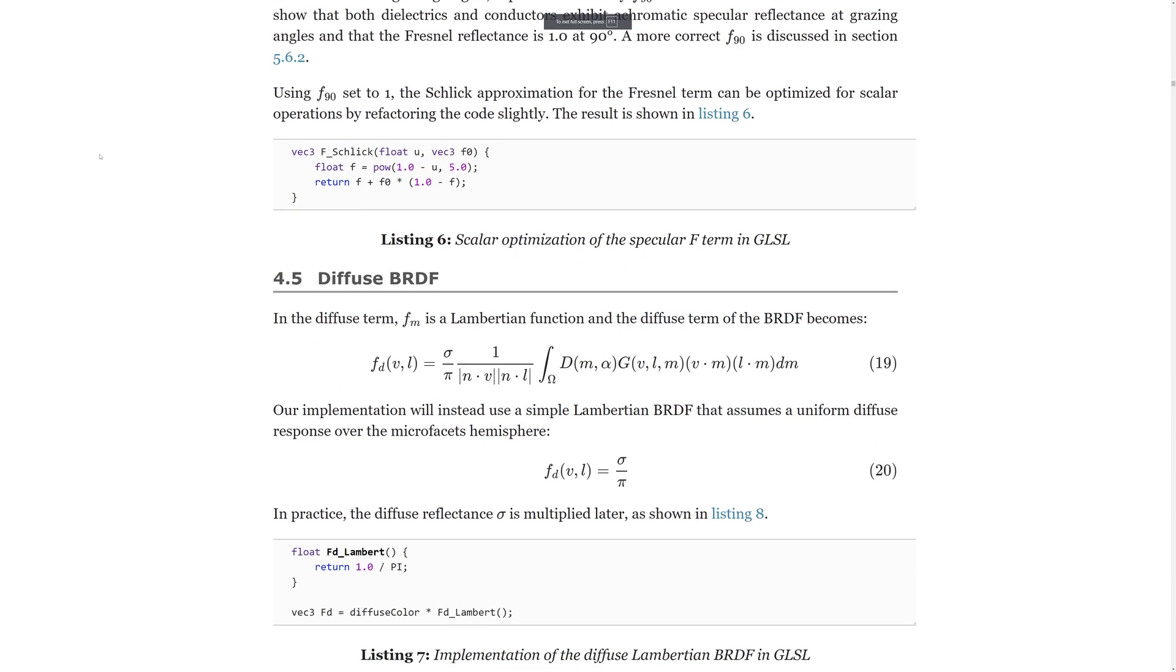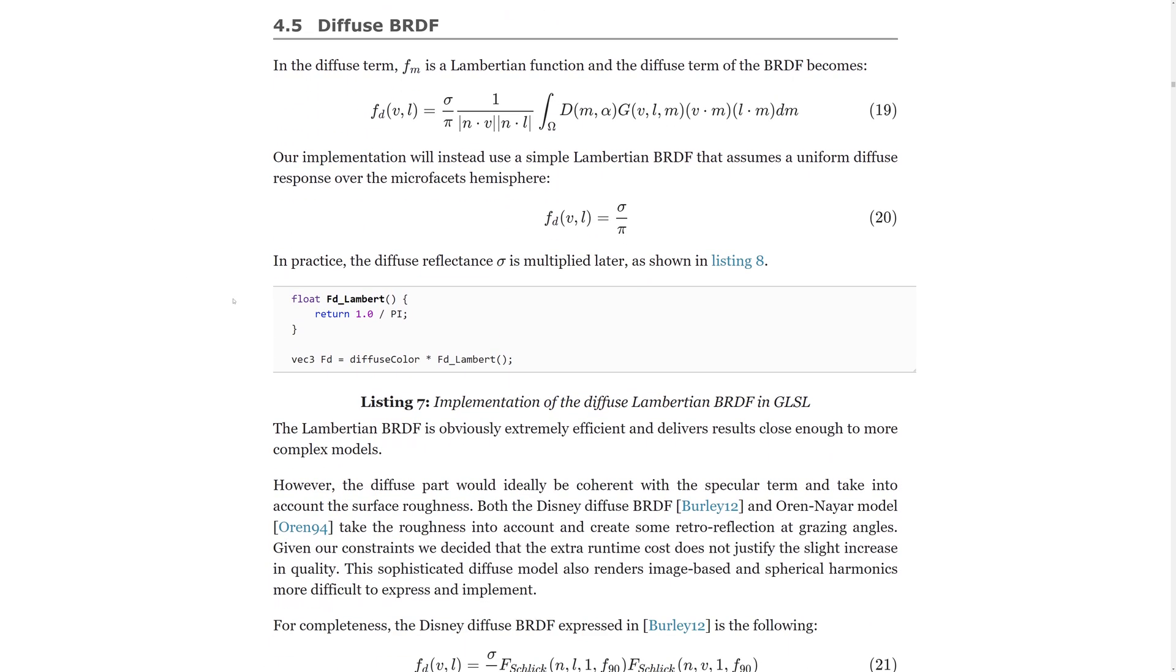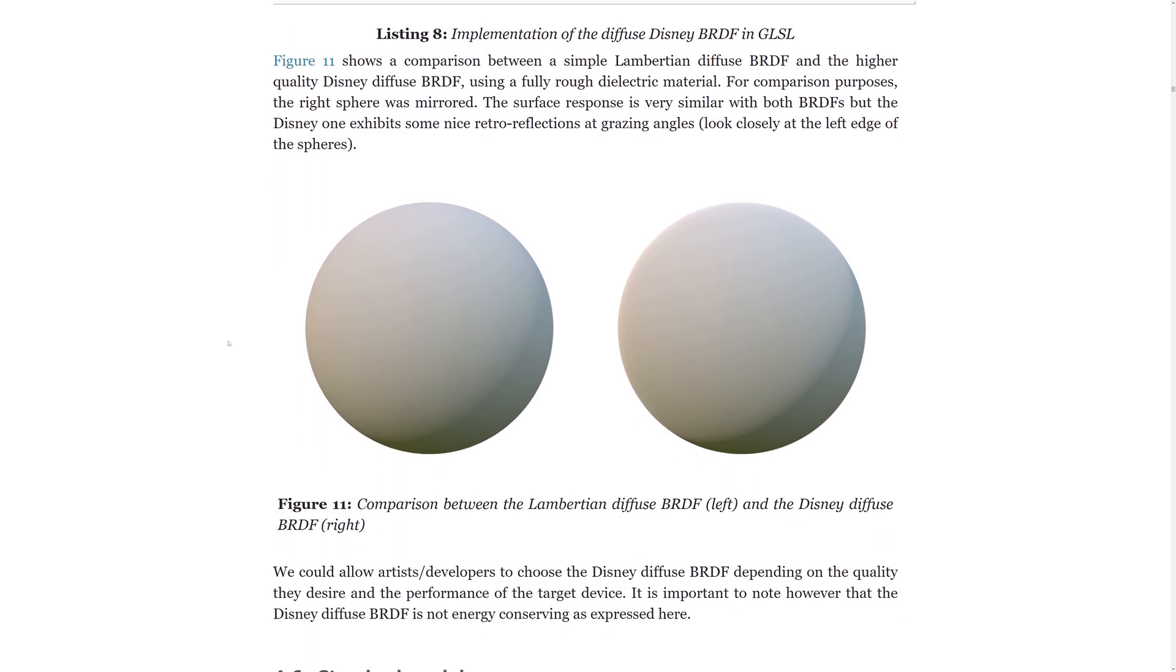The D, G and F terms are all we need in order to compute the specular BRDF. We look at the diffuse part next. Here, the simplest approximation is a uniform value, which is given by the material's diffuse color divided by pi. There are better models like the one in this paper, but as you can see, the difference is almost imperceptible.